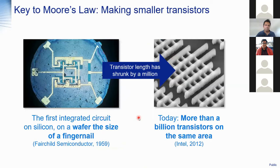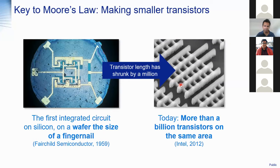The key to Moore's law is integration density. The first integrated circuits contained just one transistor, but today we can fit more than a billion transistors in the same area. The chip size didn't increase — the number of transistors within a chip increased by millions. That means we need smaller transistors. If we increased chip size, it becomes difficult to maintain yield — the number of good chips per wafer. So chip producers keep chip size the same and condense more transistors into a smaller area.